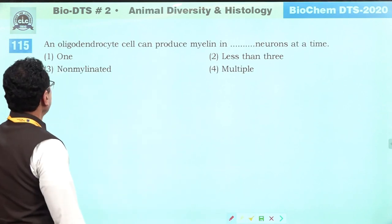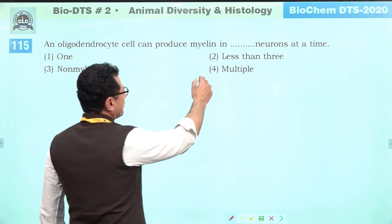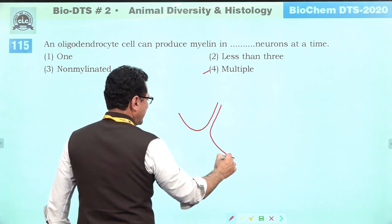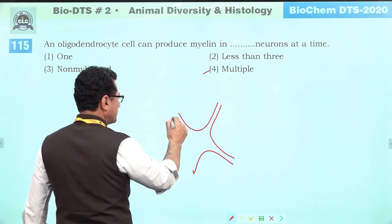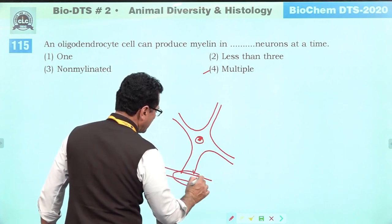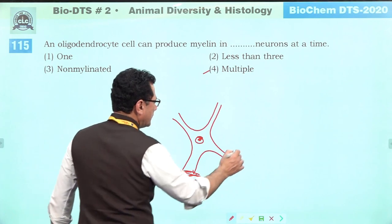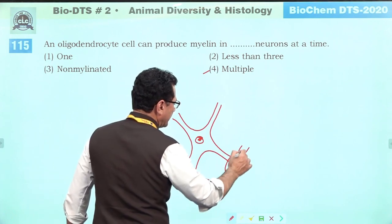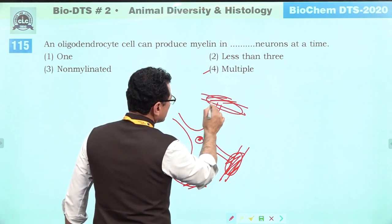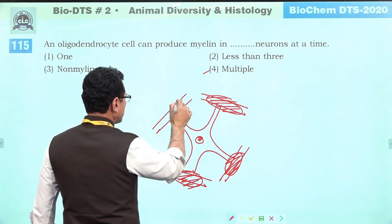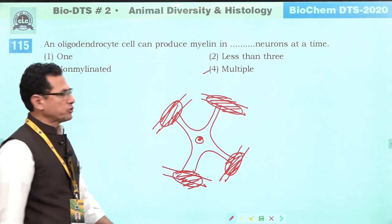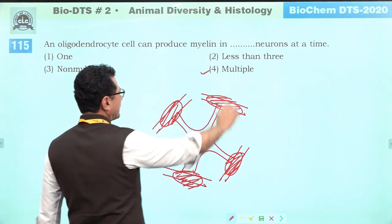An oligodendrocyte cell can produce myelin around multiple neurons at a time. It can produce myelin sheaths around many axons simultaneously. Answer is four.